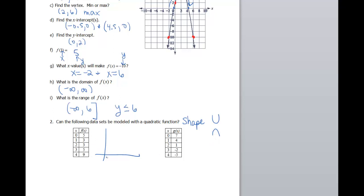So when I plot (0, 5), that goes here. (1, 3) goes about right here. (2, 3) goes about right here. (3, 5) goes about right here. And (4, 9) goes up here. So certainly, if I were to connect these dots, I would say this has a U shape. So the answer would be yes.